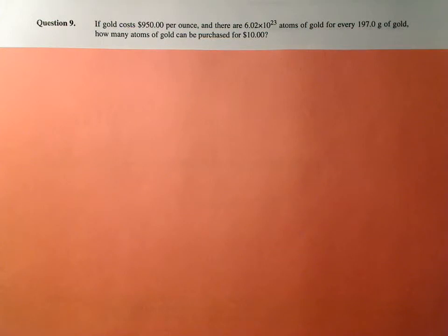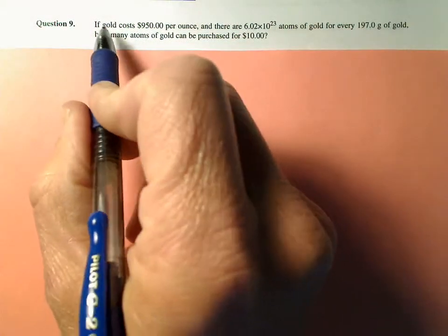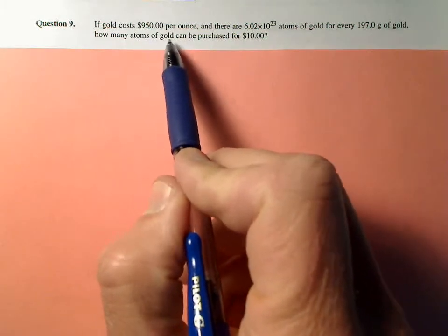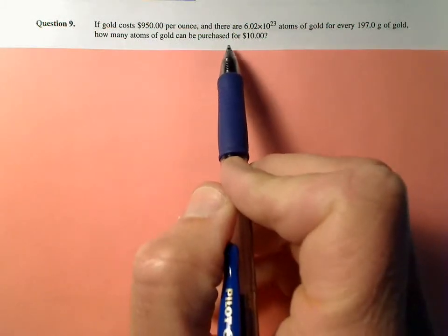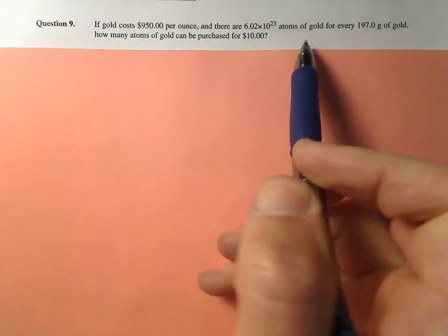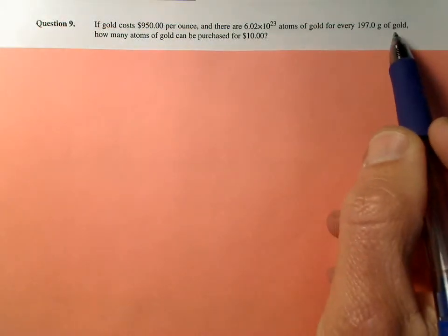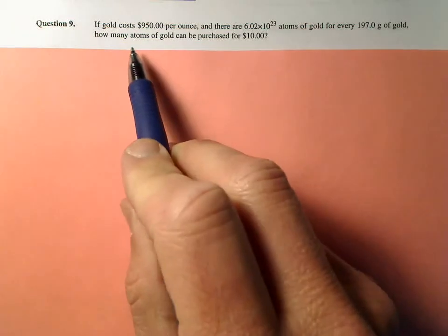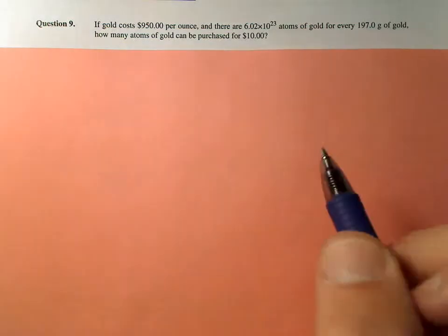Alright, let's look at number 9. If gold costs $950 per ounce and there are 6.02 times 10 to the 23rd atoms of gold for every 197 grams of gold, how many atoms of gold can be purchased for $10?